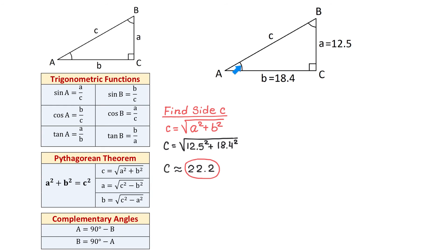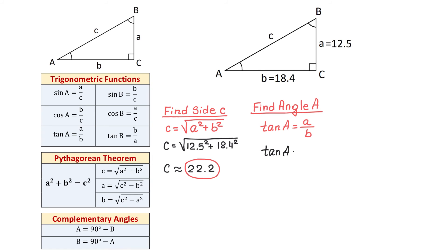Next, we will find angle A. I will use the formula tangent of A equals side A divided by side B, because we know side A and side B. Replacing, we have tangent of angle A equals 12.5 over 18.4. To find angle A, we take the tangent inverse of 12.5 over 18.4. Using a calculator, we get that A is approximately 34 degrees.